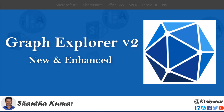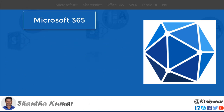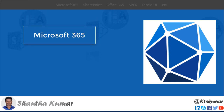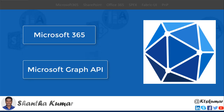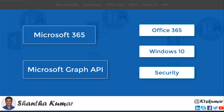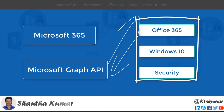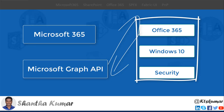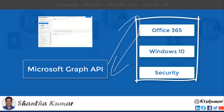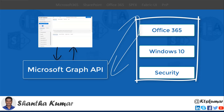Before jumping into Graph Explorer, we need to understand two terms. One is Microsoft 365 and another one is Microsoft Graph API. Microsoft 365 combines three services: Office 365, Windows 10, and Security. By using the Microsoft Graph API, we can fetch and access all the data across Microsoft 365 services. By using the Graph Explorer, we can test the Graph API endpoints and fetch data across Microsoft 365.